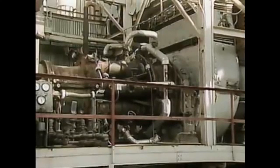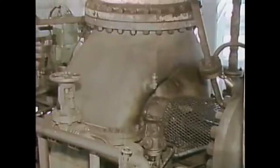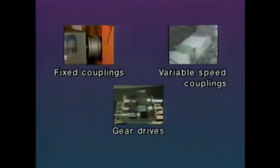In this part, we'll look at different devices commonly used with compressors: drivers, couplings, after coolers, safety valves, and receivers. Drivers are the devices that provide the power needed to operate compressors. Compressors are most commonly driven by electric motors, although in some cases gas turbines or steam turbines may be used. Several types of devices are used to transfer power from a driver to a compressor, including fixed couplings, variable speed couplings, and gear drives.